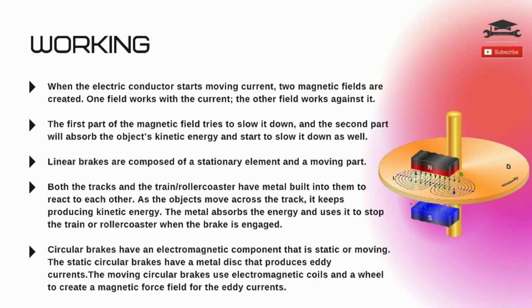Linear brakes are composed of a stationary element and a moving part. Both the tracks and the train or the roller coaster have metal built into them to react to each other. As the objects move across the track, it keeps producing kinetic energy. The metal absorbs the energy and uses it to stop the train or roller coaster when the brake is engaged. Circular brakes have an electromagnetic component that is static or moving. The static circular brakes have a metal disc that produces eddy currents. The moving circular brakes use electromagnetic coils and a wheel to create a magnetic force field for the eddy currents.